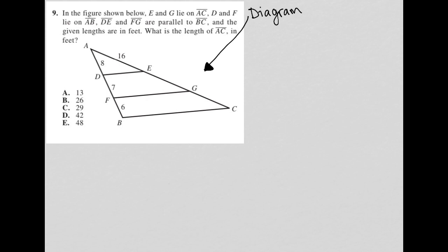So the question says in the figure shown below, E and G lie on line segment AC. We see that EG is on line segment AC. Then we also see that D and F lie on line segment AB. Line segment DE and line segment FG are parallel to line segment BC, so I'm just drawing my parallel symbols here.